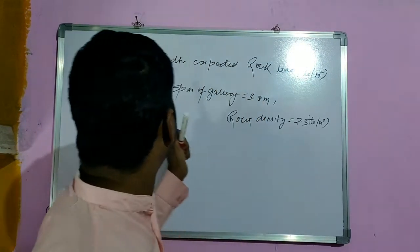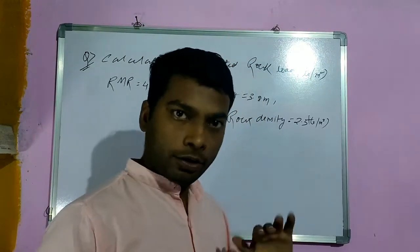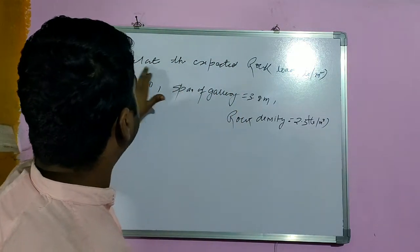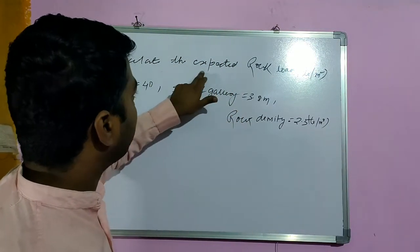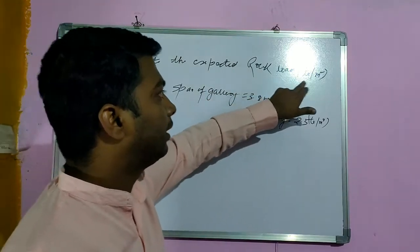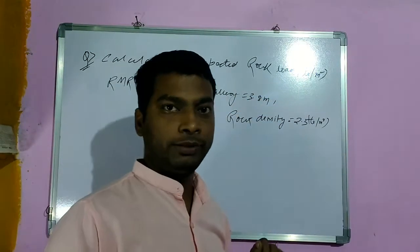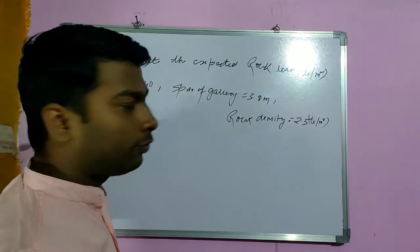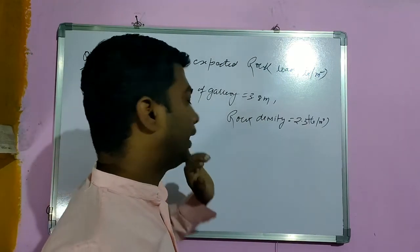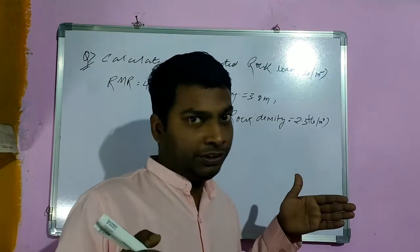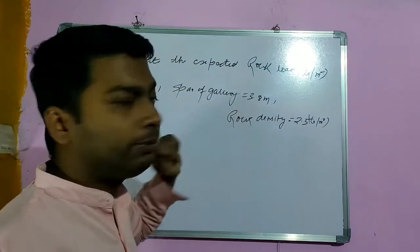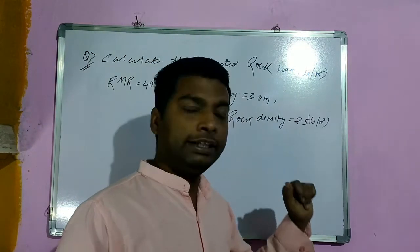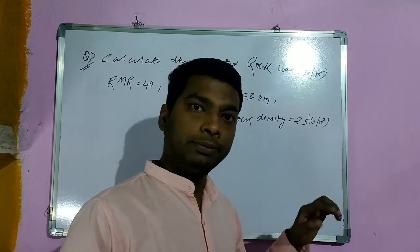Now this is the question. Calculate the expected rock load in tonnes per meter square. The span of gallery or width of gallery is 3.1 meters, and rock density is 2.3 tonnes per meter cube.